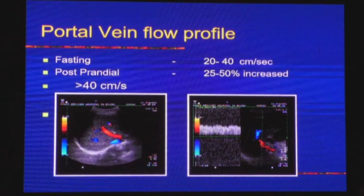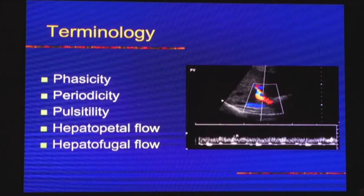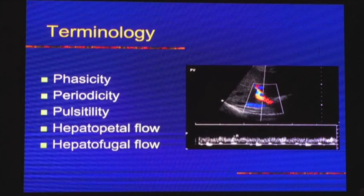Diameter varies when taking a deep inspiration, doing Valsalva, and in fasting versus postprandial states — that must be noted in the patient's condition. In fasting state, portal vein velocity is 20 to 40 cm/s, and postprandial it shows a 25 to 50 percent increase, becoming more than 40 cm/s. In the liver there are three vessels: hepatic artery and portal vein taking blood to the liver, and hepatic veins taking blood away.